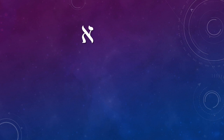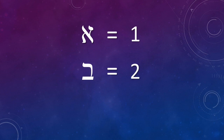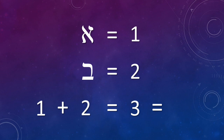Let's look at Aleph, the first letter. It has the simple gematria total of one. The letter Bet has the simple gematria of two. When added together, one plus two equals three — and three is the gematria of the symbol Gimel. Why is this important? You shall see the fuller picture when we put all of the pieces together.